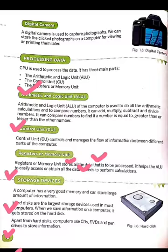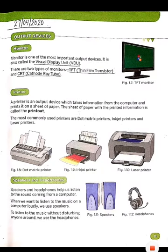Here are some examples of output devices. The first example is a monitor. A monitor is one of the most important output devices. It is also called the Visual Display Unit. There are two types of monitors: TFT and CRT. CRT stands for Cathode Ray Tube.